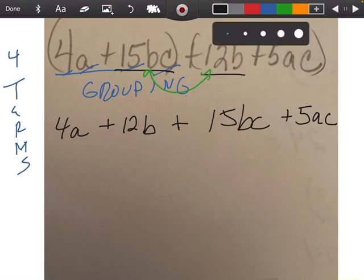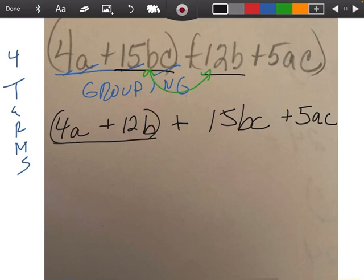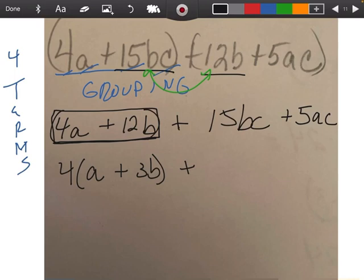Now that we have that, the reason why I want to do that is because now when I look at these two pieces here and I say, what can I factor out of those two pieces? Well, we can take out a 4 and we're left with an a plus 3b.